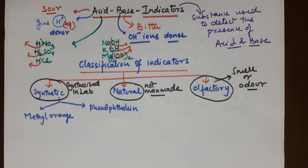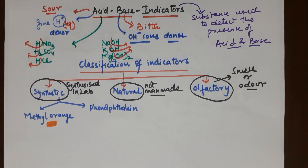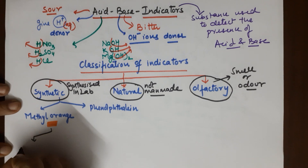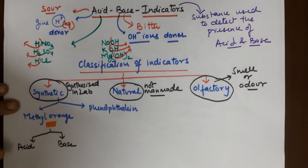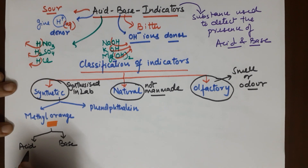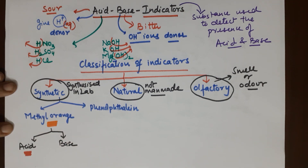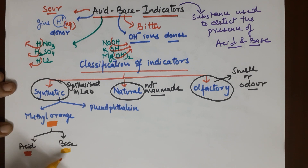The first synthetic indicator is methyl orange. Its original color is orange. When you add methyl orange to an acid, it changes to red. When added to a base, it changes to yellow. So if orange turns red, the substance is an acid; if orange turns yellow, it is a base.